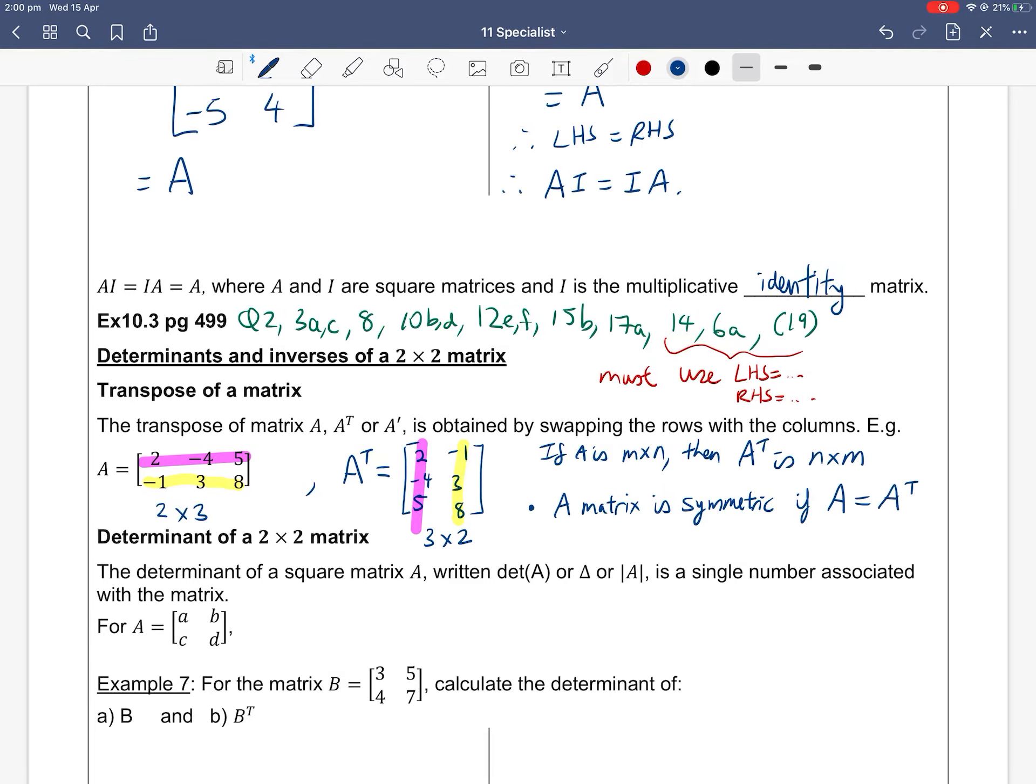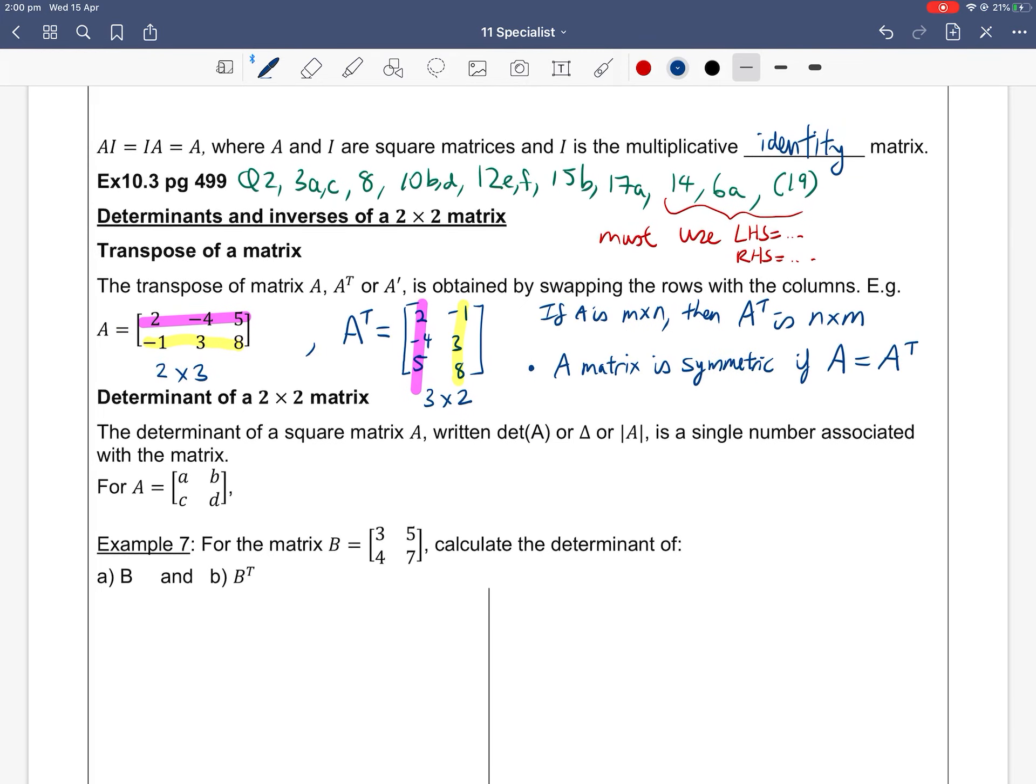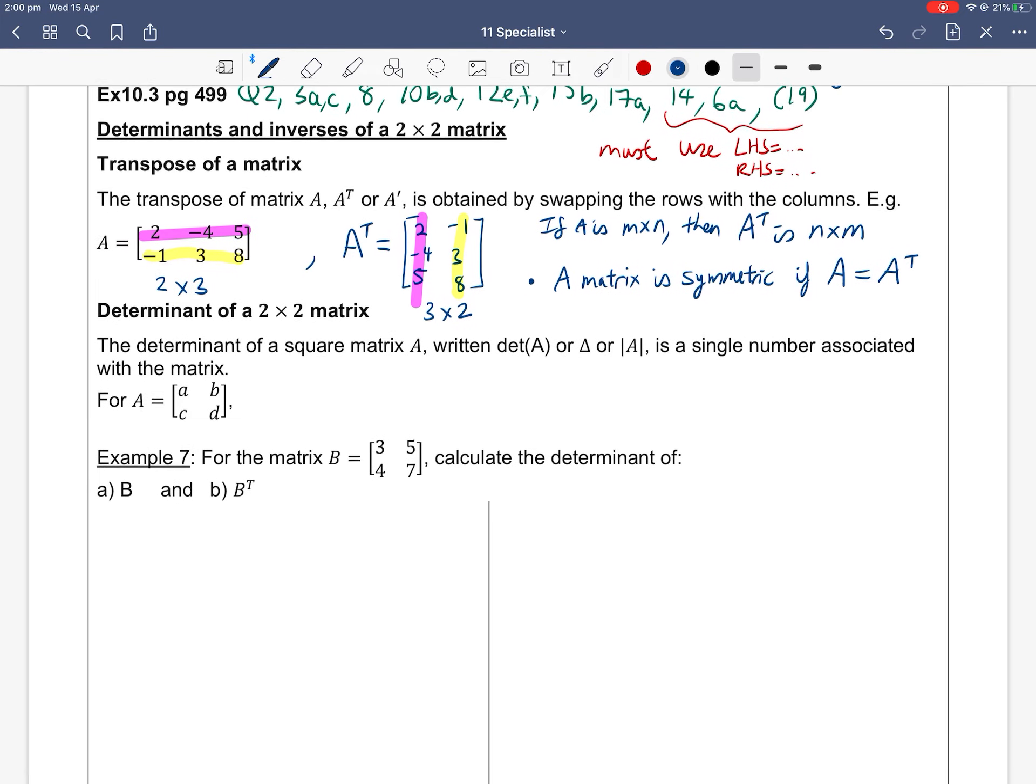One classic example is the identity matrix. If you transpose the identity you get the original one back, so the identity matrix is a symmetric matrix.